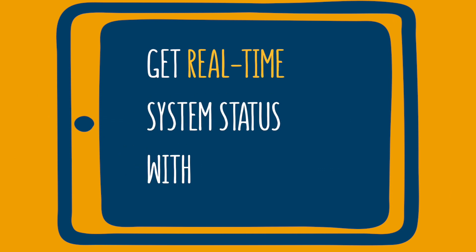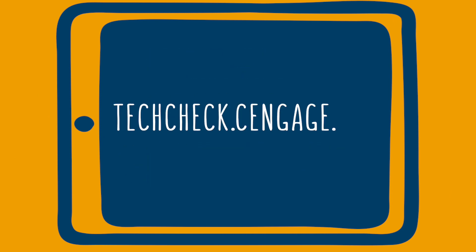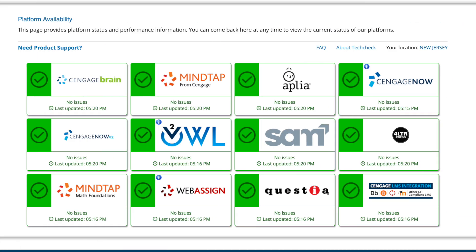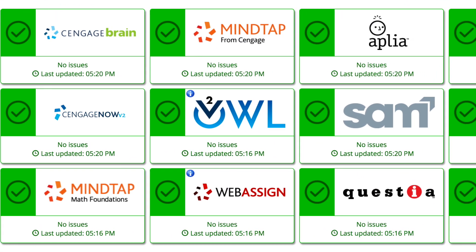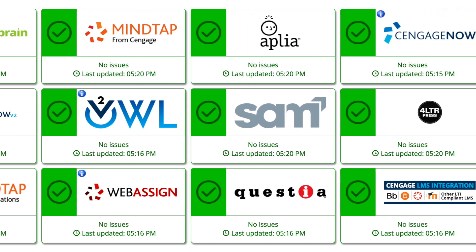Get real-time system status with TechCheck. TechCheck.cengage.com provides immediate insight into system performance, so you can quickly see if Cengage is experiencing technical difficulties.